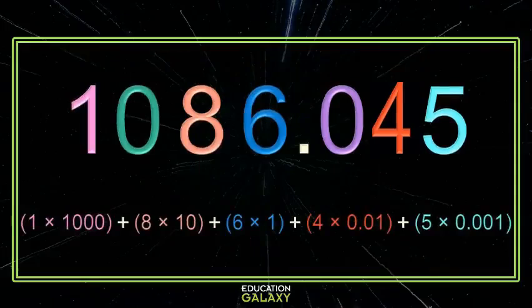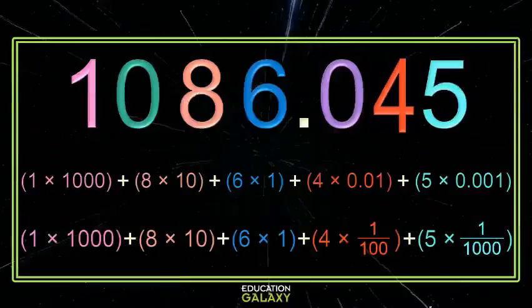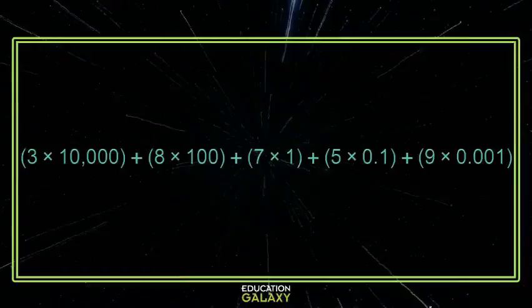Now some of you might also see the decimal portions as fractions. Don't let that throw you off. You know that a hundredth is one hundredth and that a thousandth is one thousandth. No big deal. Now what if our number's already given to us in expanded notation?